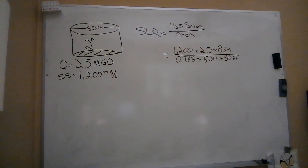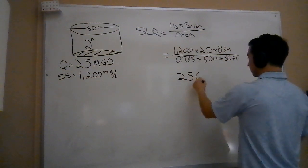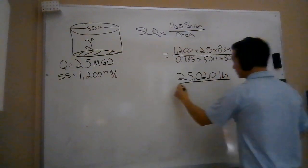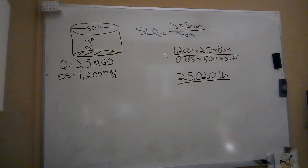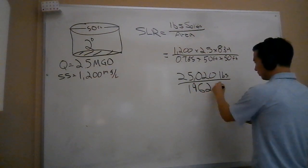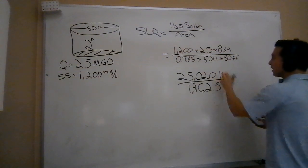When we run the top, we get 1200 times 2.5 times my 8.34 weight of water, and I get 25,000 pounds of solids. Divided by my area, so 0.785 times 50 times 50, that gets me to...